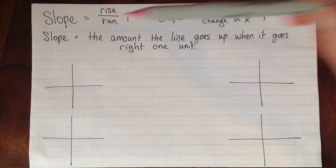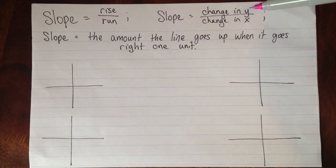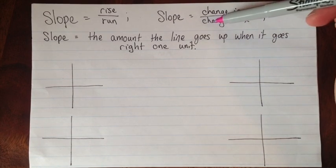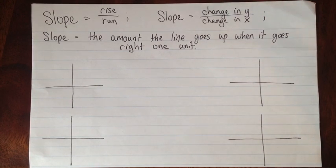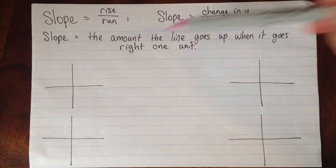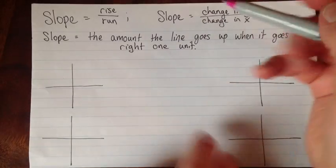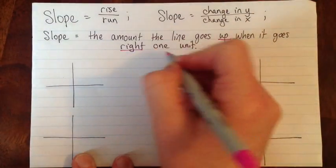So the slope is the rise divided by the run, and another way of saying that is that the slope is the change in y, that's how much we've gone up between two points, divided by the change in x, which is how much we go over between two points. Now another way of looking at it is that the slope is the amount that the line goes up when it goes right one unit.